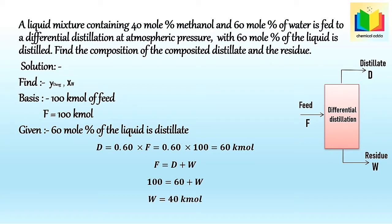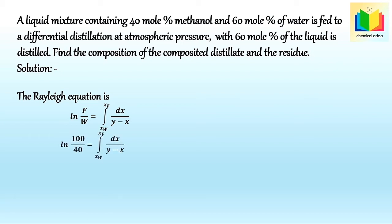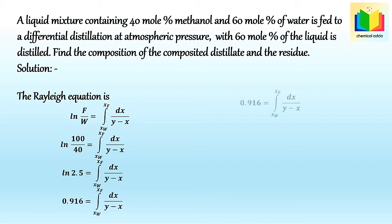Now let's substitute the values of F and W into the Rayleigh equation: ln(F/W) = integral from Xw to Xf of dx/(y - x). Substituting F = 100 and W = 40: ln(100/40) = integral from Xw to Xf of dx/(y - x), which gives 0.916 = integral from Xw to Xf of dx/(y - x).